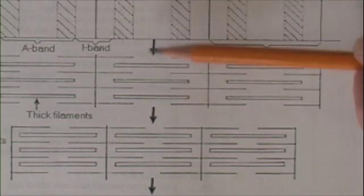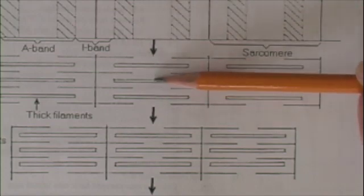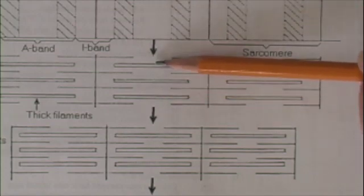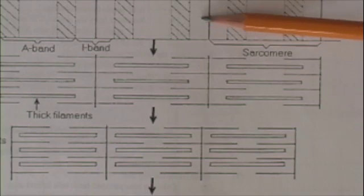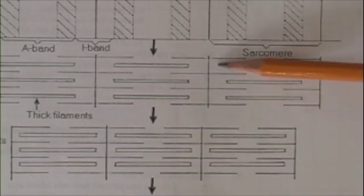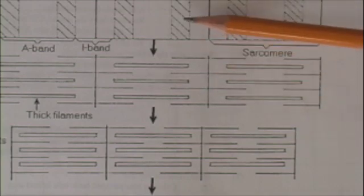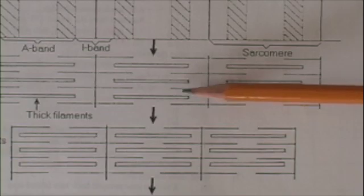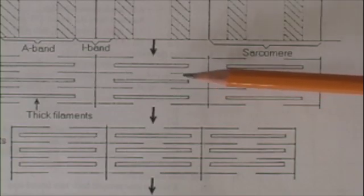For example, this light band is due simply to thick filaments. This light band is due to thin filaments. The dark band is due to thick and thin filaments.